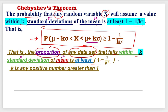When the theorem says 'any random variable,' what we get from it is that even if the distribution is discrete or continuous, or even if the distribution is unknown, this theorem can still be used. So if there is no clue about the distribution and you are looking for some kind of probability, this theorem is applicable. The random variable can assume a value within k standard deviations — that is, k times sigma of its mean.